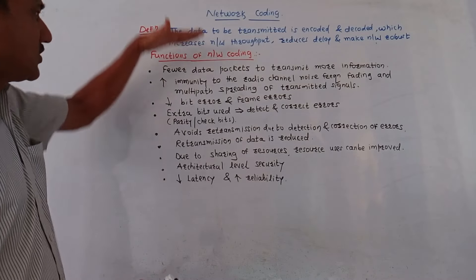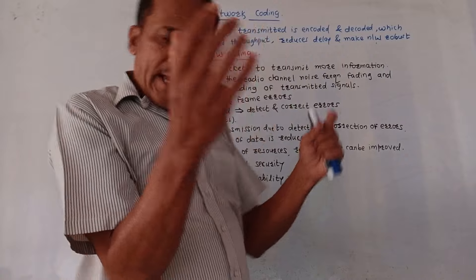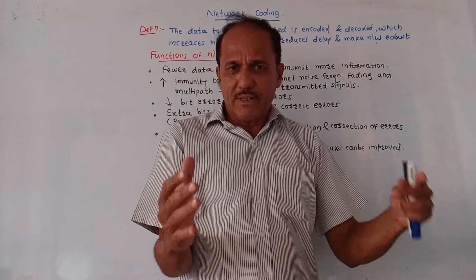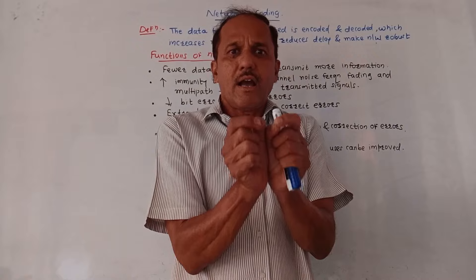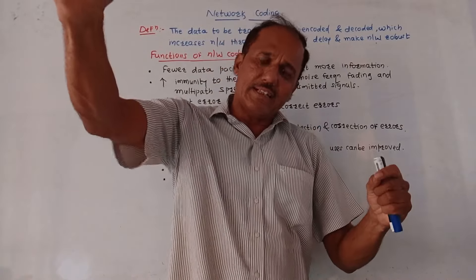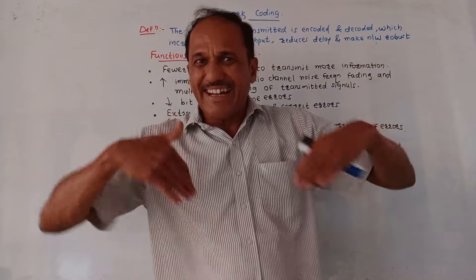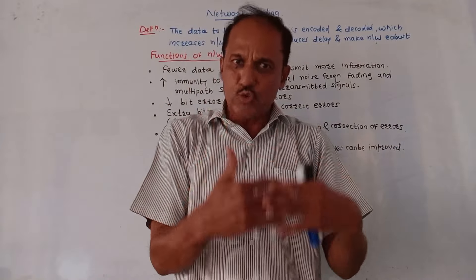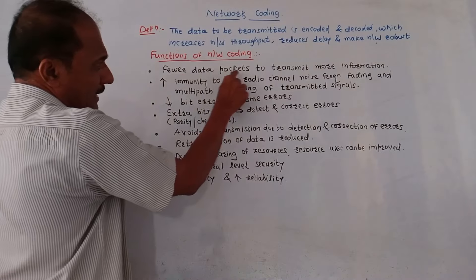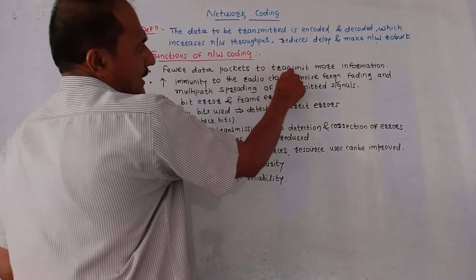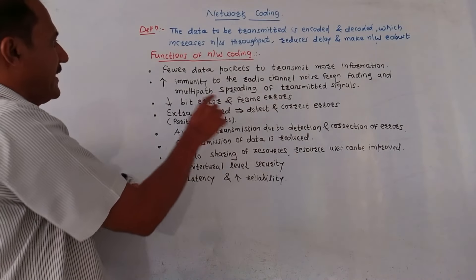Now, what are the functions of network coding? Certain coding is applied at the transmitter end, then the data is sent. At the receiver end, you get the coded information and decode it so that the end user can interpret the data. Fewer data packets are used to transmit more information because we are applying coding at the transmitter end.